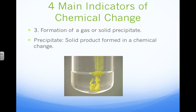The third of the four main indicators of chemical change is: was there a formation of a gas or a solid precipitate? A precipitate is a solid product formed in a chemical change. The image shows a gooey solid clump forming once the dropper adds the new substance into the other. So how is it interacting? It's creating a solid precipitate when it interacts.